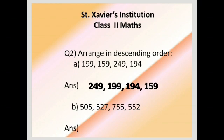Second sum: 505, 527, 755, 552. Largest number is 755, followed by 552, then 527, and finally 505.